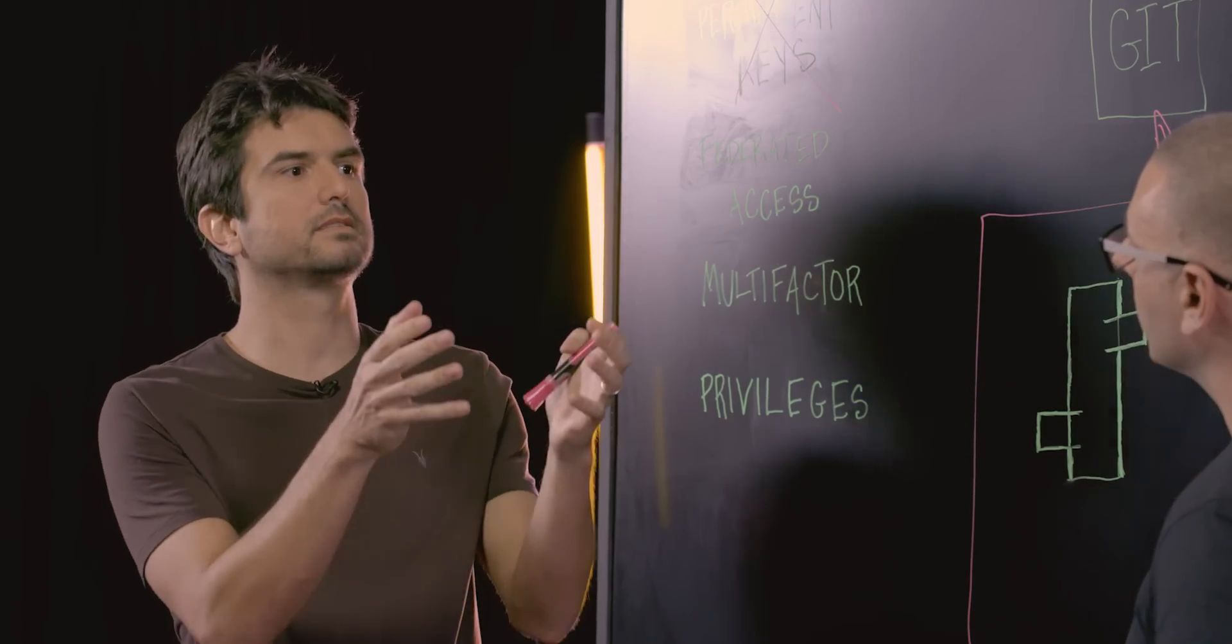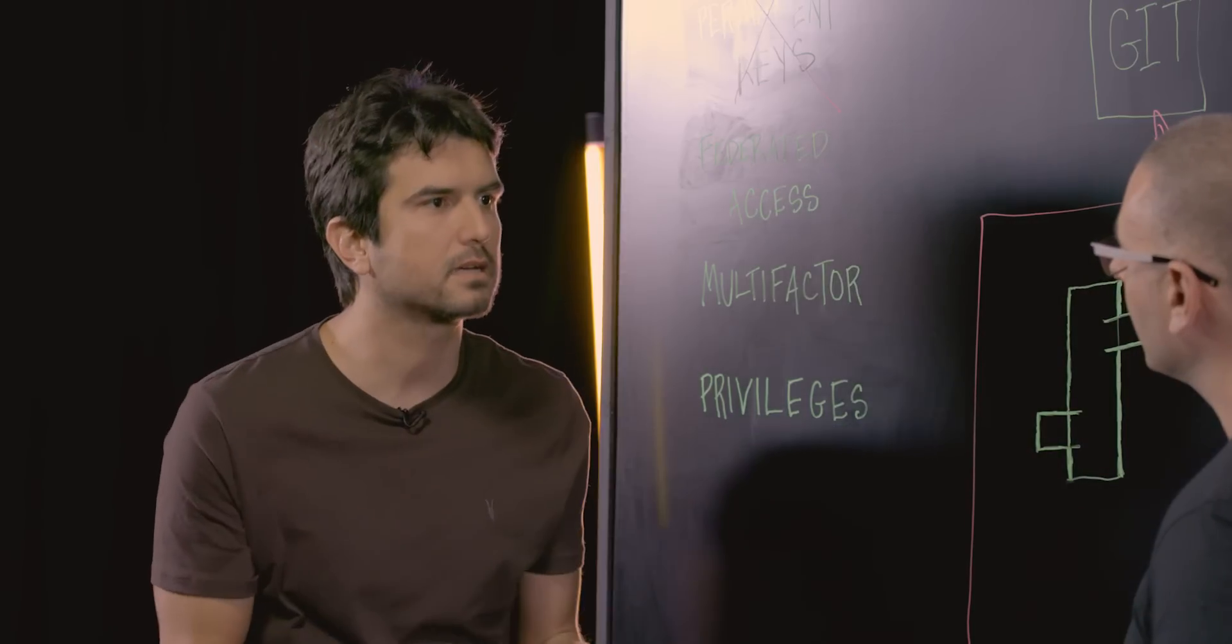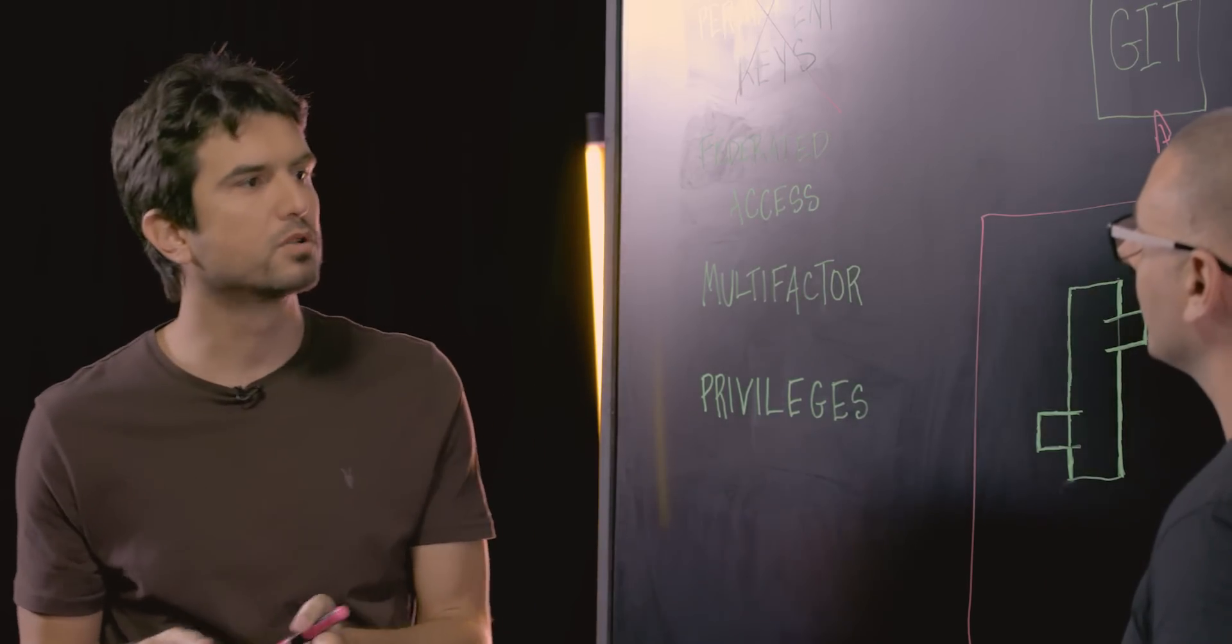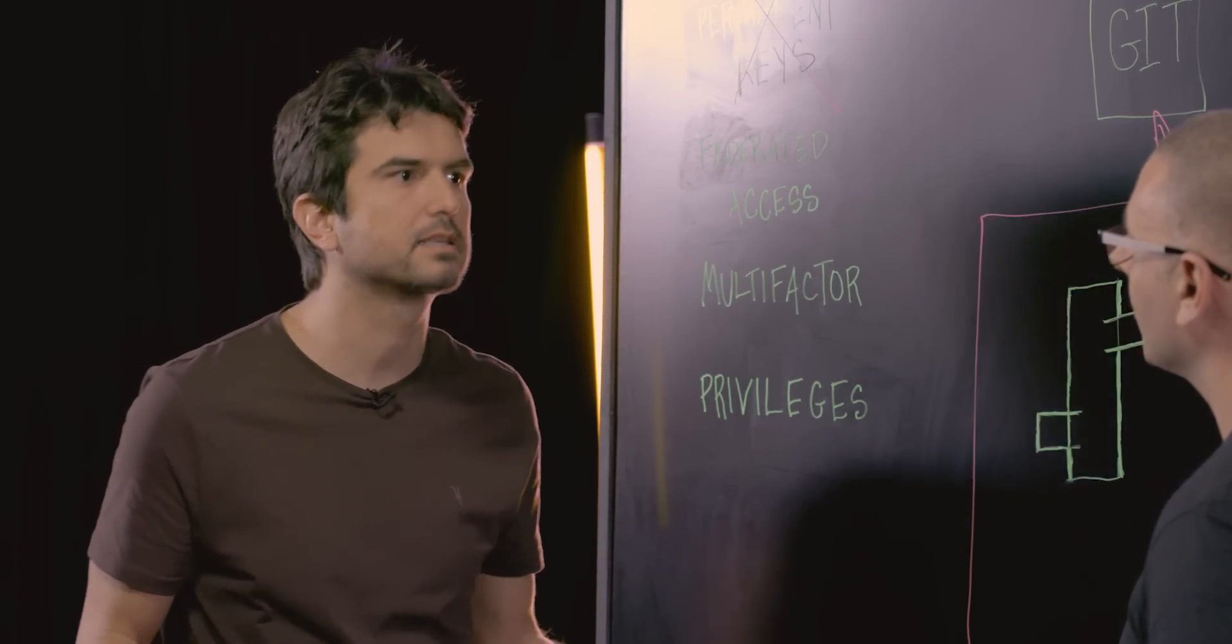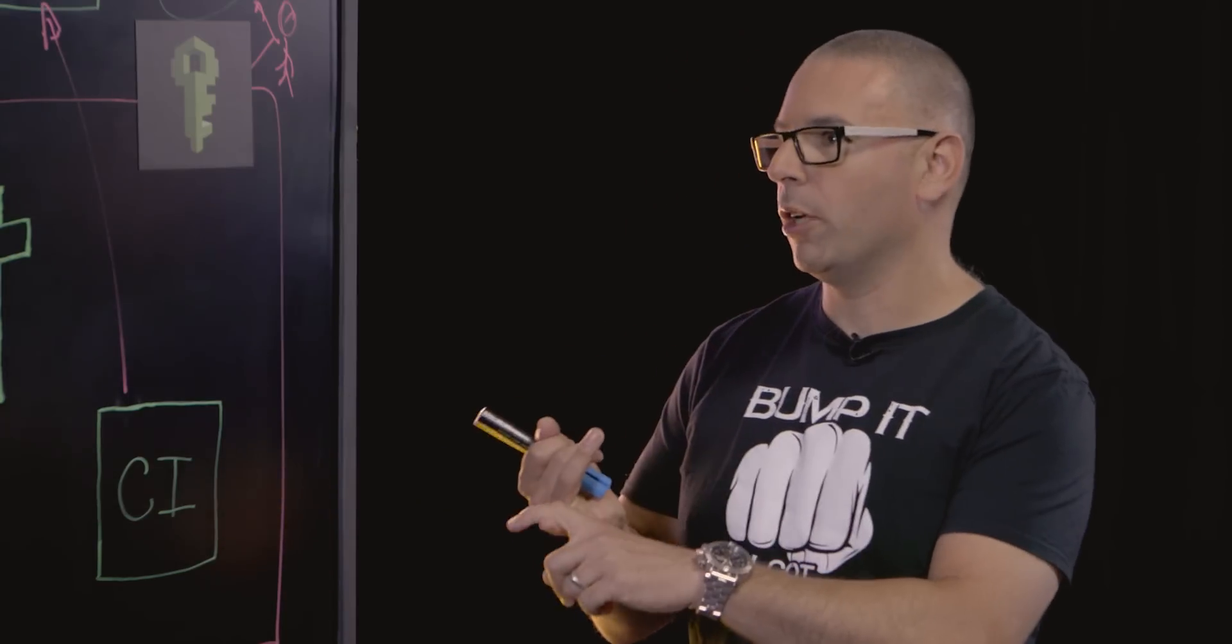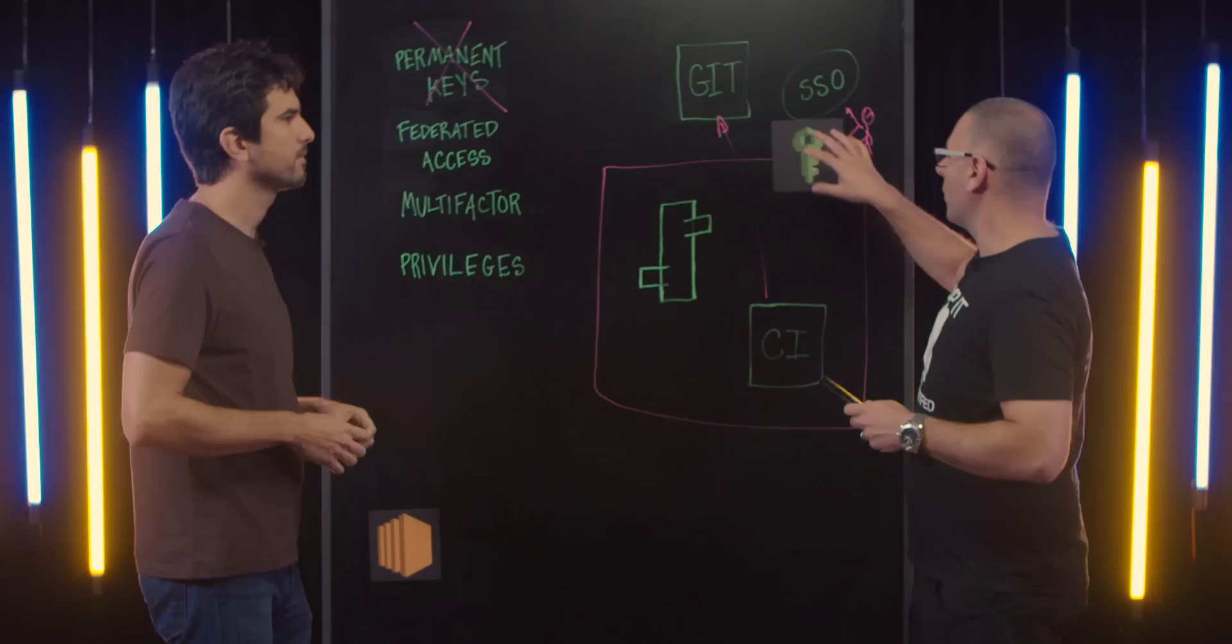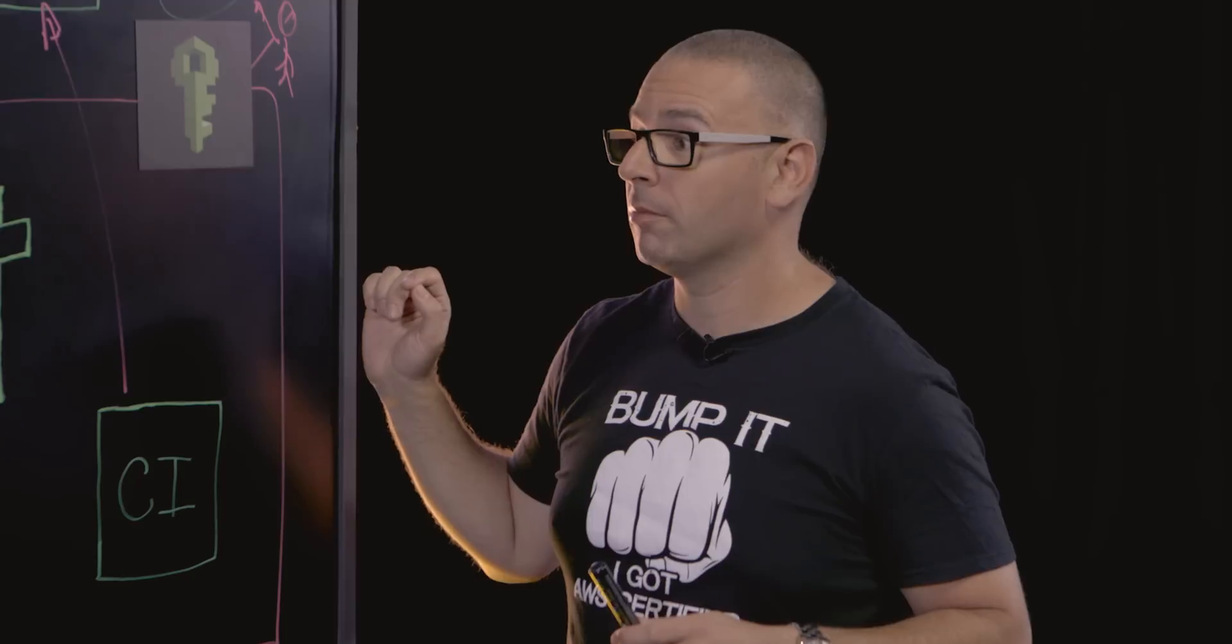And this console tool talks with Simple Token Service, gets a temporary key, and puts it in his profile so he can call the Amazon APIs as he wants with the proper role. Fantastic. So you're challenging with multi-factor, so you've got extra security. The token they're getting is only temporary anyway, so it doesn't really matter. That's great.